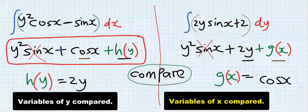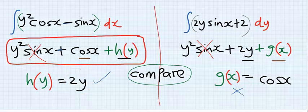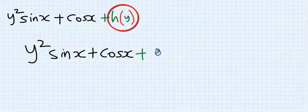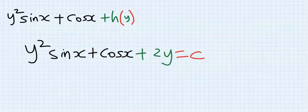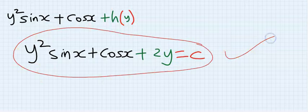However, I'm after h(y) and not g(x). Next, I will substitute for my h(y), which is 2y equals a constant. This becomes my answer and my final result.